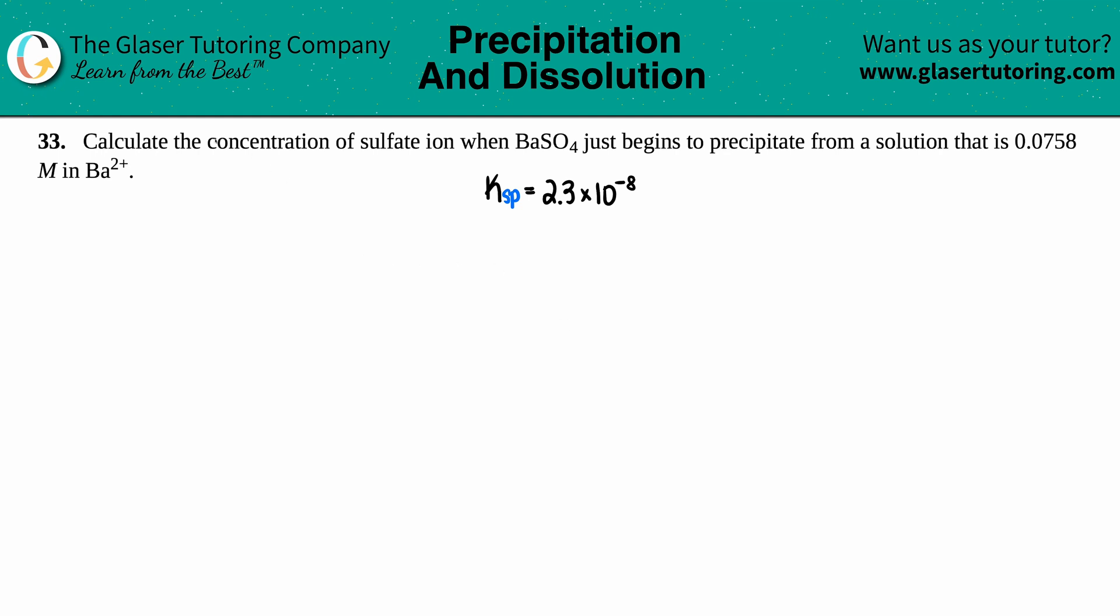Number 33: Calculate the concentration of the sulfate ion when BaSO4 just begins to precipitate from a solution that is 0.0758 molarity in the barium ion Ba2+. So we're talking about precipitation and we want to find the concentration of one ion when given the concentration of another ion.